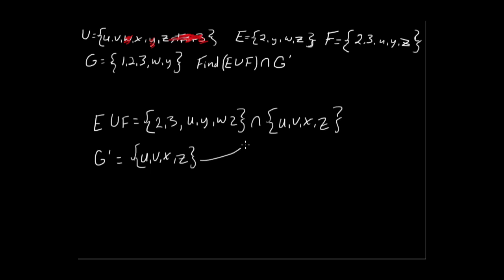Remember, this represents G complement. Oops, didn't mean to mark the Z anyway. So let's just go through and underline, or actually we'll just circle all the elements that have in common. Well, they have a U in common, no V, no X, and they do have a Z in common.